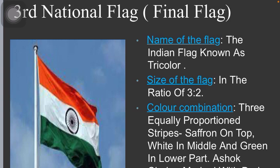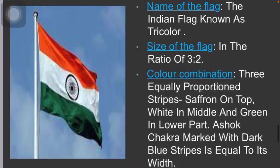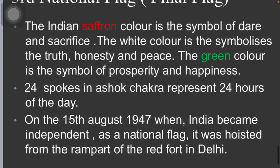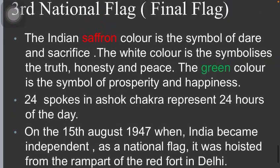The flag is made up of three proportional horizontal color strips: upper saffron, middle white, and lower green. In the middle of the white strip, equal to its width, the Dharma Chakra or Ashoka Chakra has been marked in dark blue color, containing 24 spokes. It has been taken from the Sarnath pillar of Ashoka.